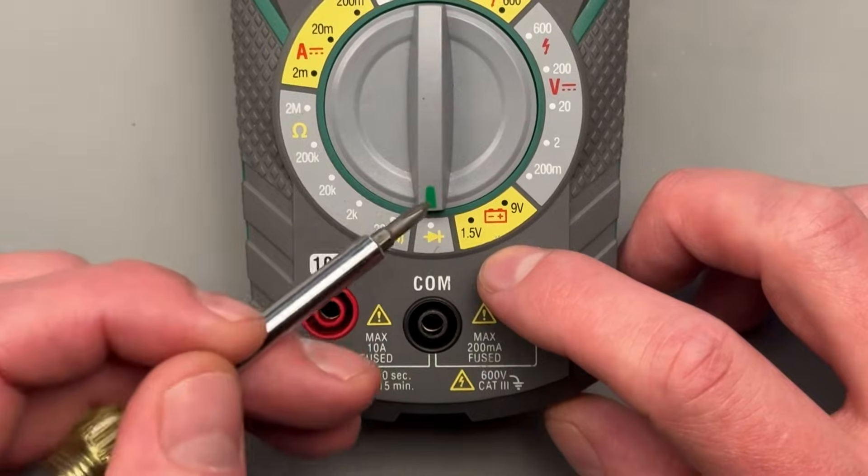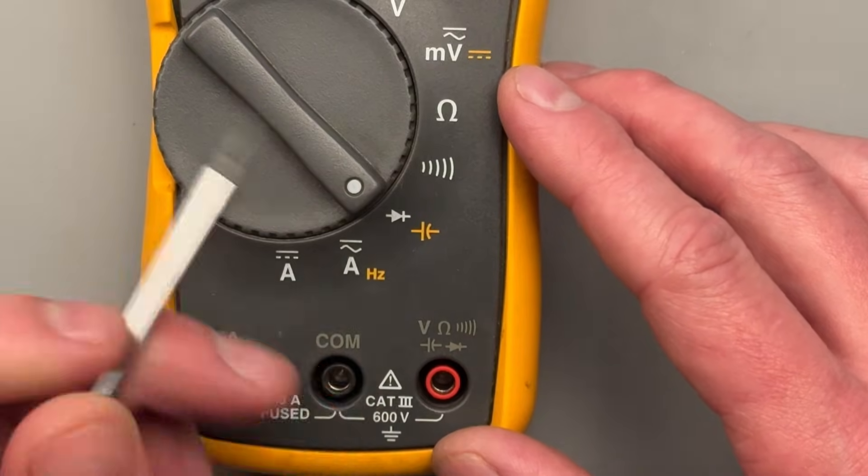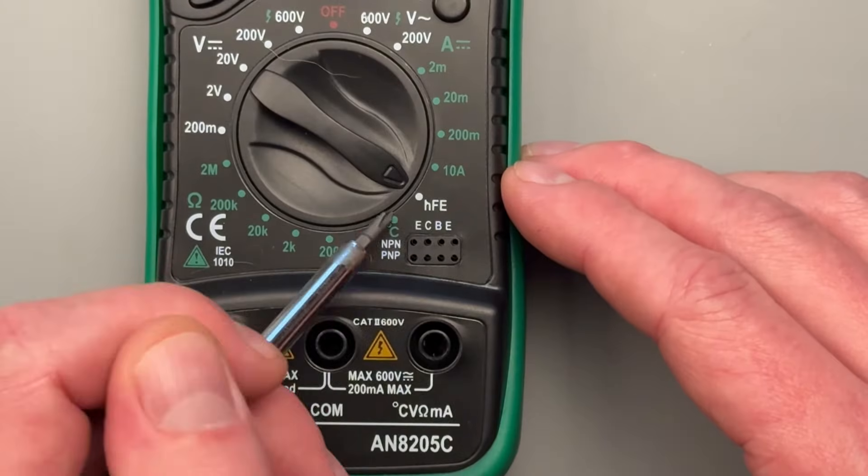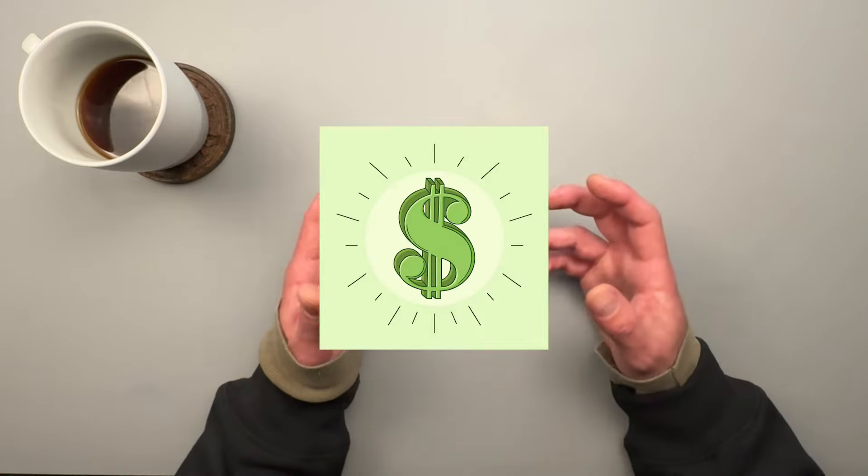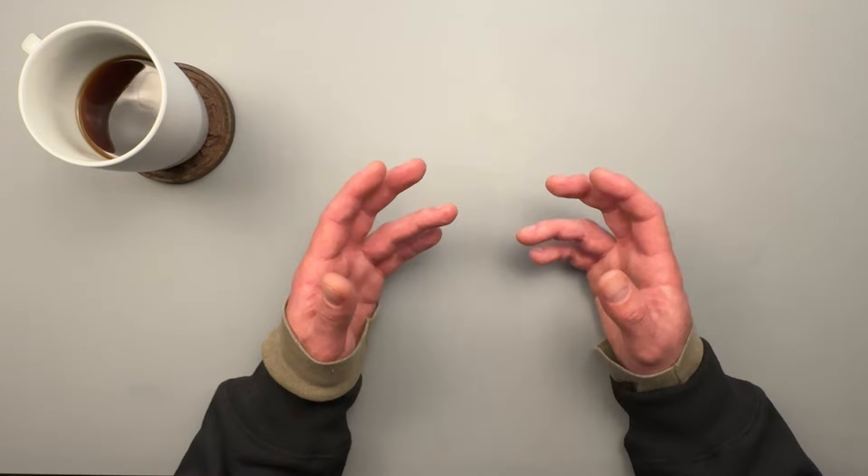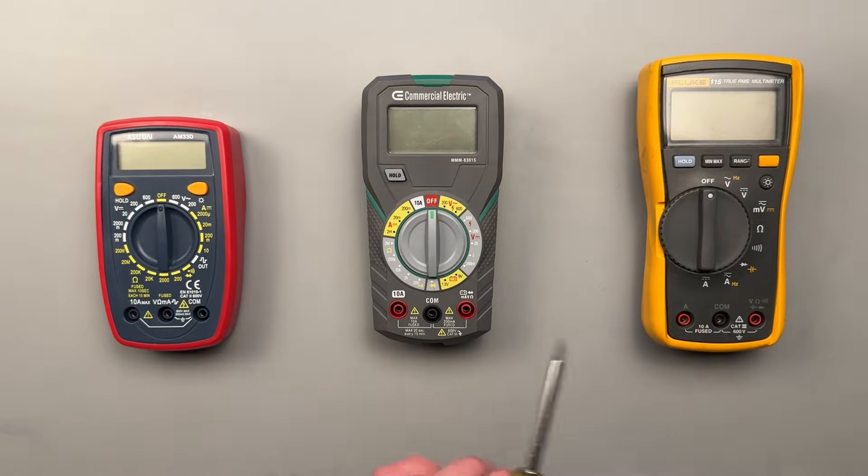Digital multimeters will also have a variety of settings that you can choose from. Most will have a setting for diodes or capacitance, others will have the ability to test transistors, and I've even seen one that will output a square wave signal for troubleshooting. We'll also be covering costs associated with different multimeters ranging from entry level to professional grade.